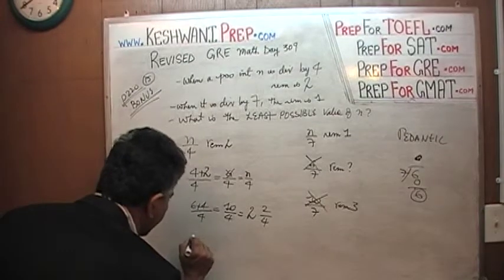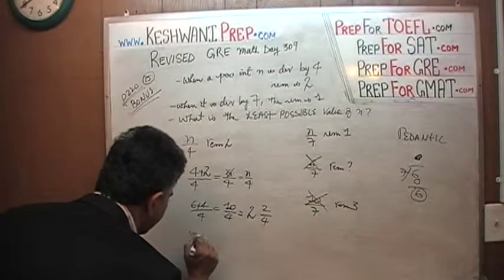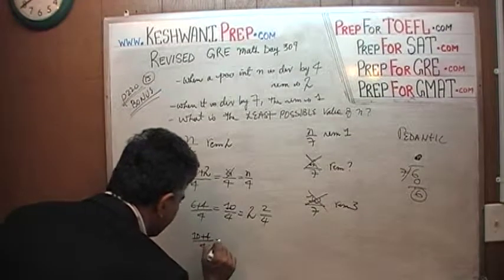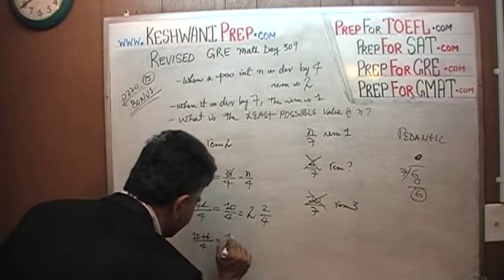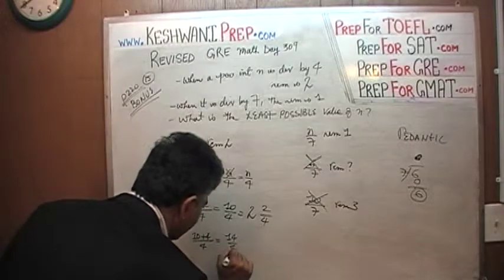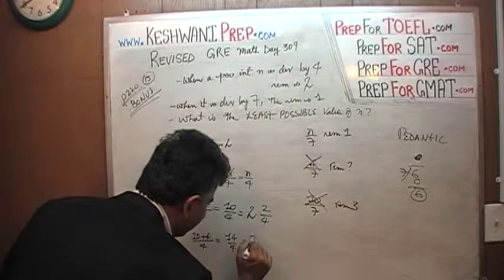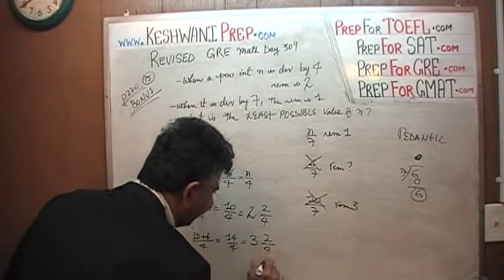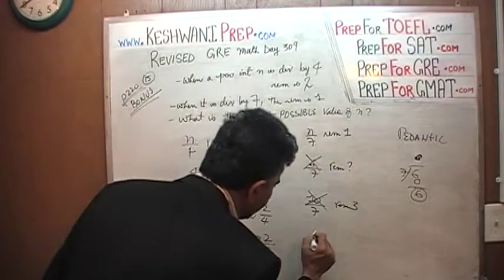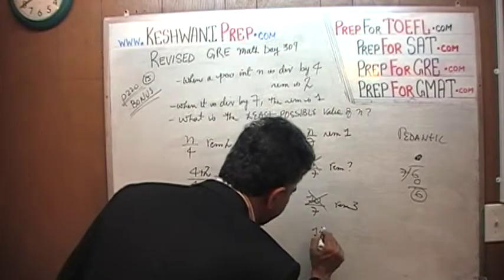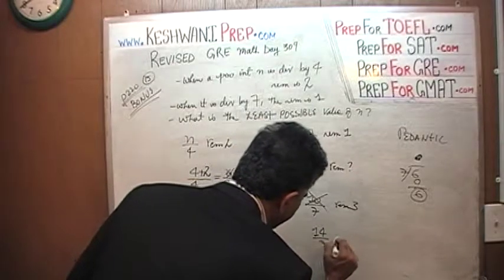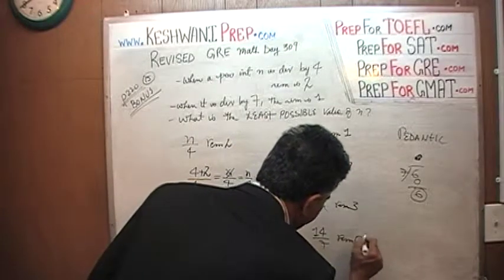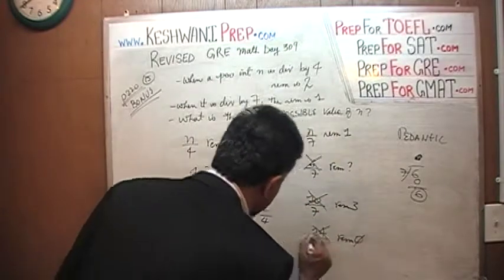Let's try 14. Adding 4 again: 14 divided by 4 goes 3 times with a remainder of 2. Let's put 14 in. 14 divided by 7 has a remainder of 0. That does not work either.